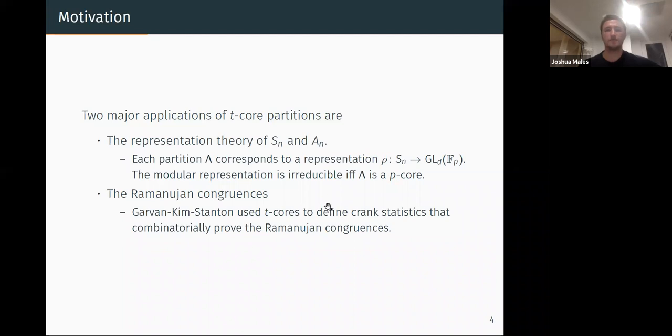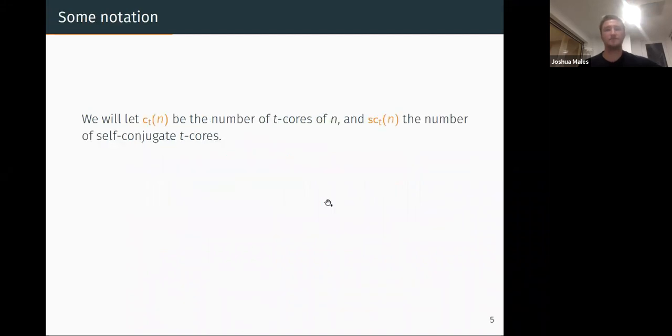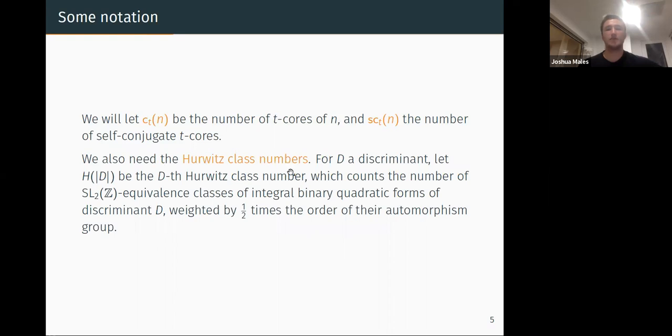So you say, Josh, that's great we can define all this stuff but do they exist? Okay, well first let's let c_t(n) be the number of t-cores of n and then we stick an s in front if it's self-conjugate. So the main thing we concentrate on is sc_7. We'll also need these Hurwitz class numbers.